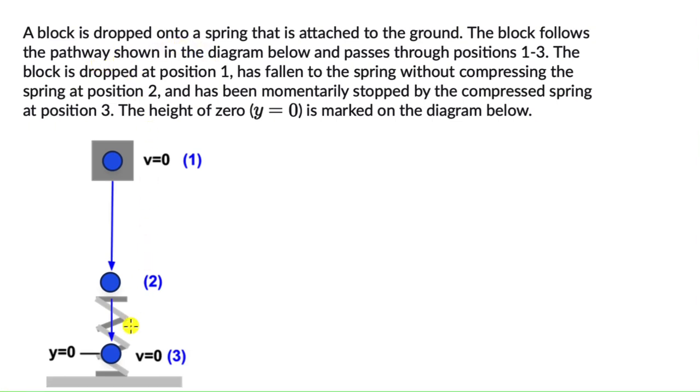A block is dropped onto a spring that is attached to the ground. We can see that happening. The block follows the pathway shown in the diagram below and passes through positions 1 to 3.